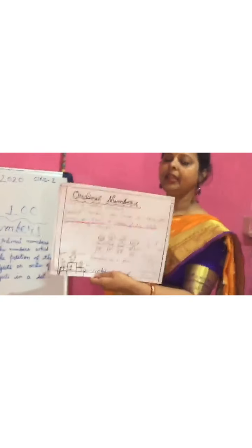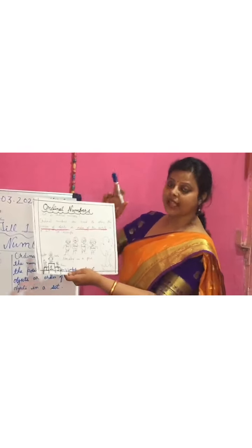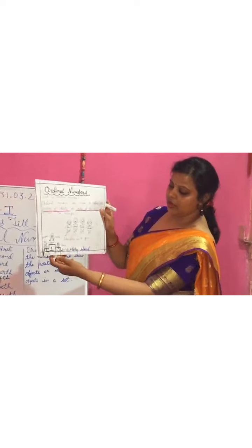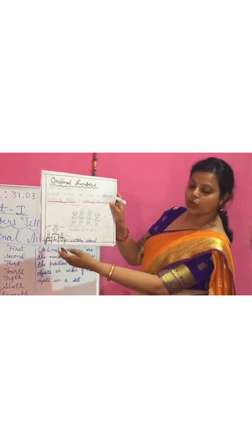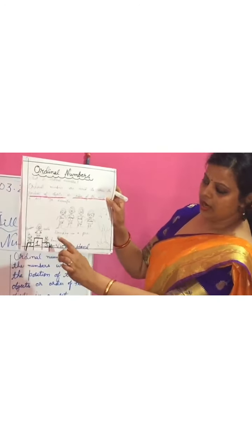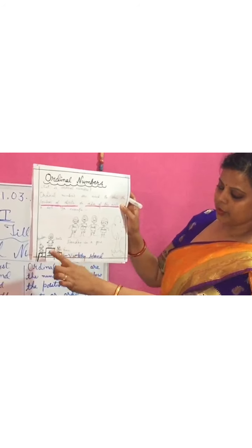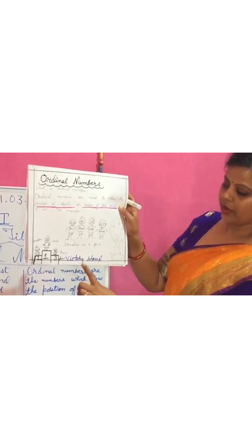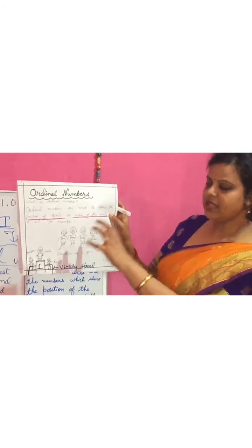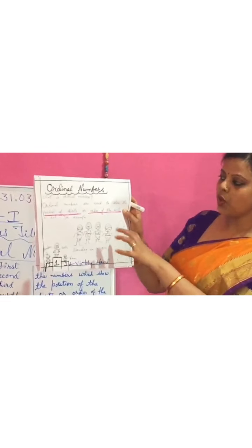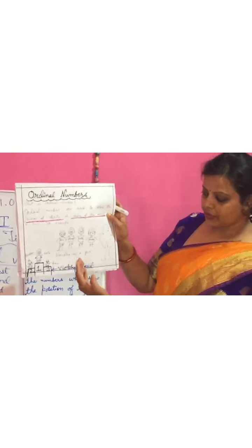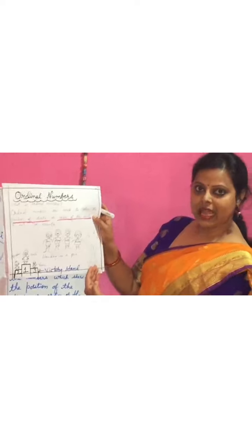Ordering like 1st, 2nd, and 3rd — the picture shows Gita, Ram, and Kundan standing on the victory stand. This small example shows how ordinal numbers work. Clear?